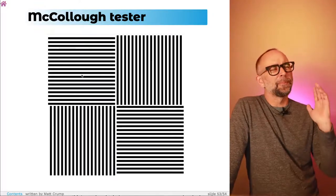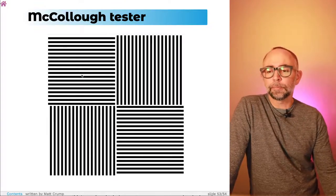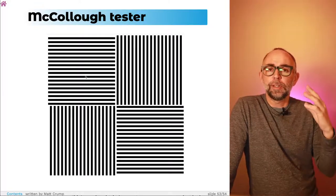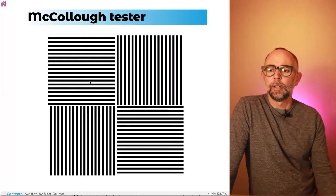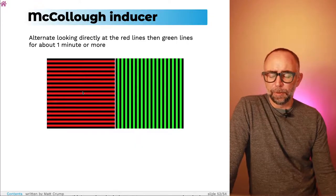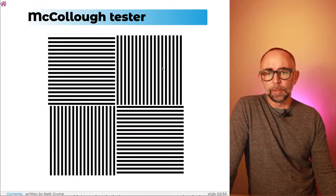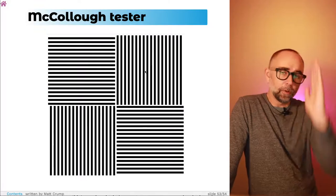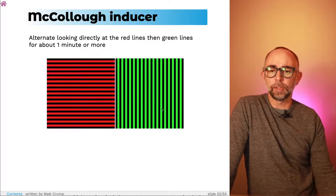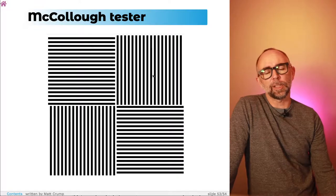When you look at the horizontal bars, you can think about this like the tone in a Pavlovian experiment. It's retrieving an association to the color aftereffect for these bars. So the color aftereffect for red is kind of a greenish thing that you would see here. And similarly, when you look at the vertical bars as a stimulus, it's retrieving a learned association to the opposite color of green. So you see that color effect here.